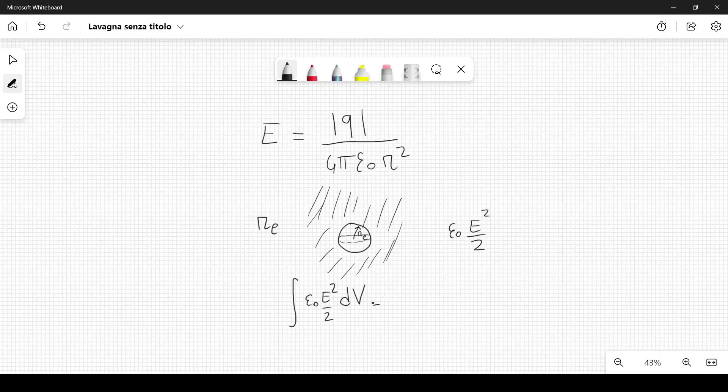So this becomes an integral of epsilon 0. E squared over 2 can be written as q squared divided by 32 pi squared epsilon 0 squared times 1 over r to the 4.